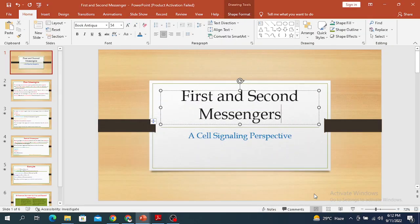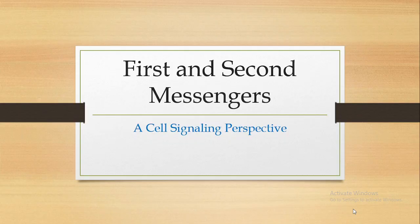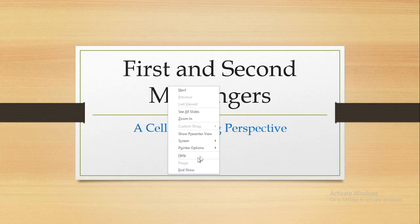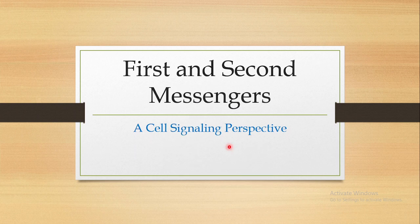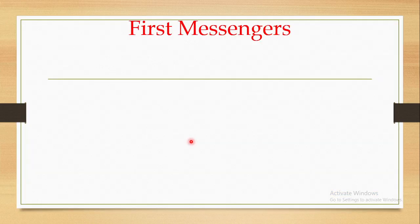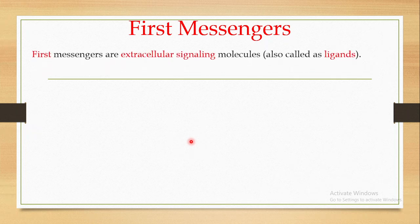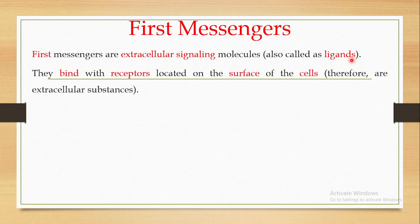Welcome back to this next video. In this video I'm going to talk about the first and the second messengers. Whenever you study cell signaling, you will come across these two terms: the first messengers and the second messengers. The first thing we are going to discuss is what are the first messengers. These first messengers are extracellular signaling molecules, also known as ligands.